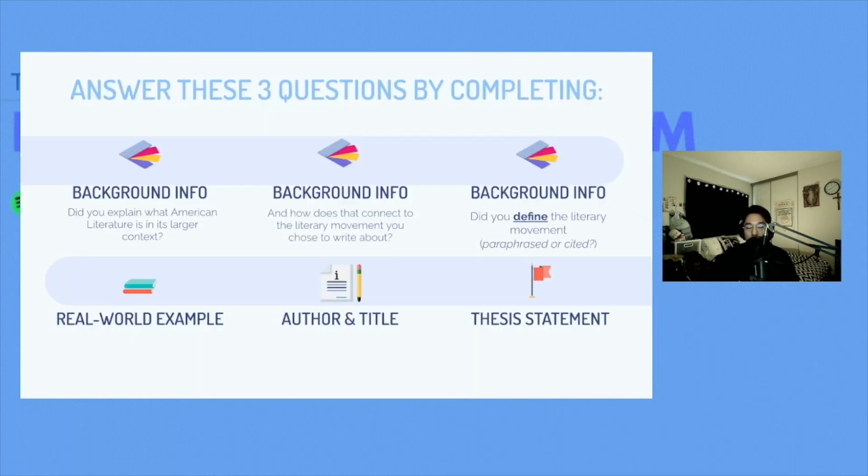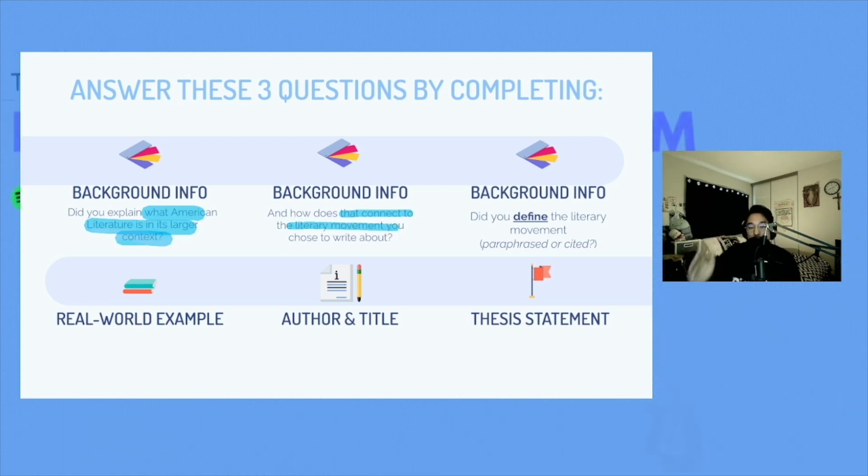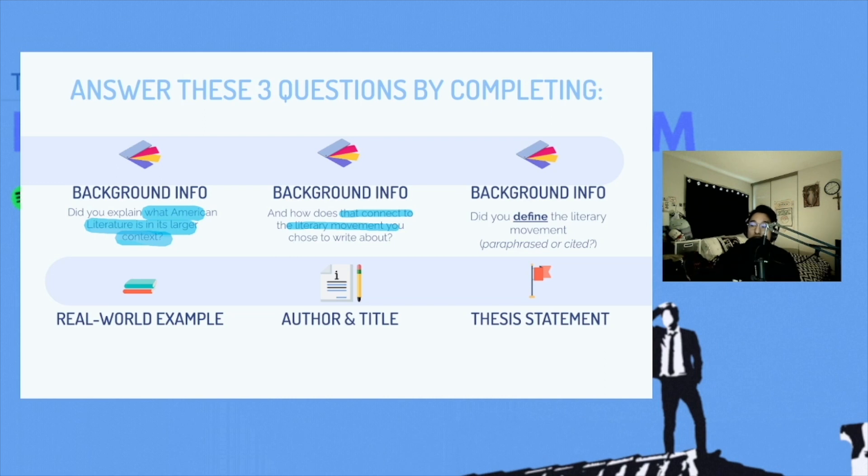So for background information, you're going to be thinking about if you explained what American literature is in a larger context. So did you describe what American literature is as a whole to a reader who probably doesn't know what American literature is? And were you able to connect that literary movement you chose to write about? As you're explaining what American literature is, you want to narrow it down to say your topic on transcendentalism.